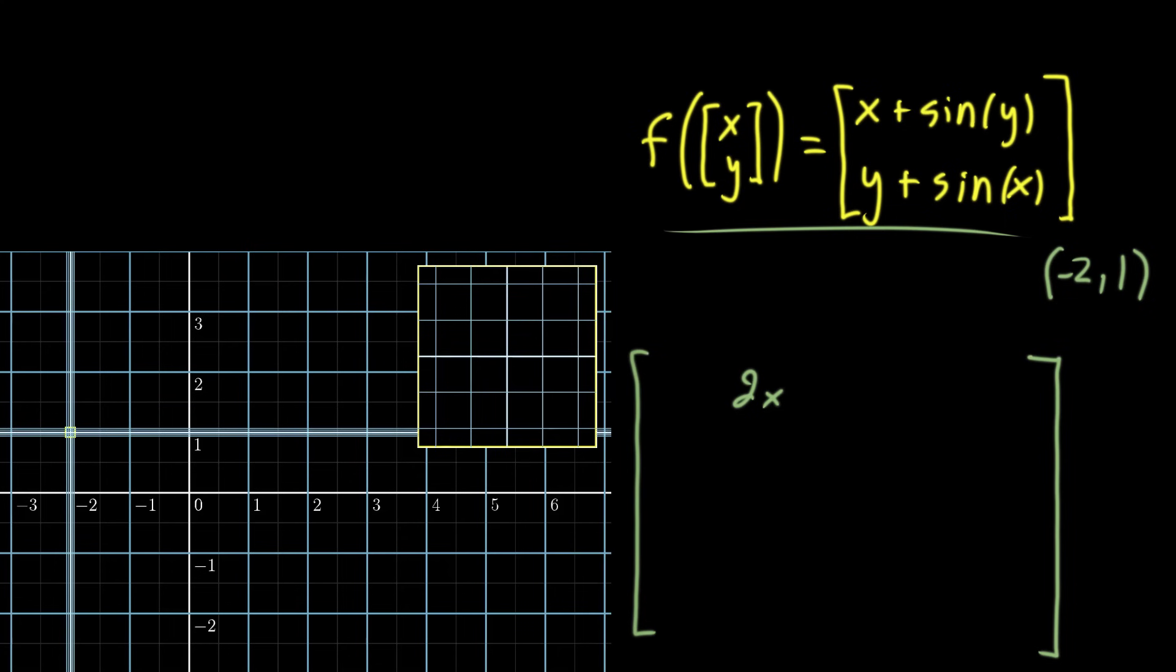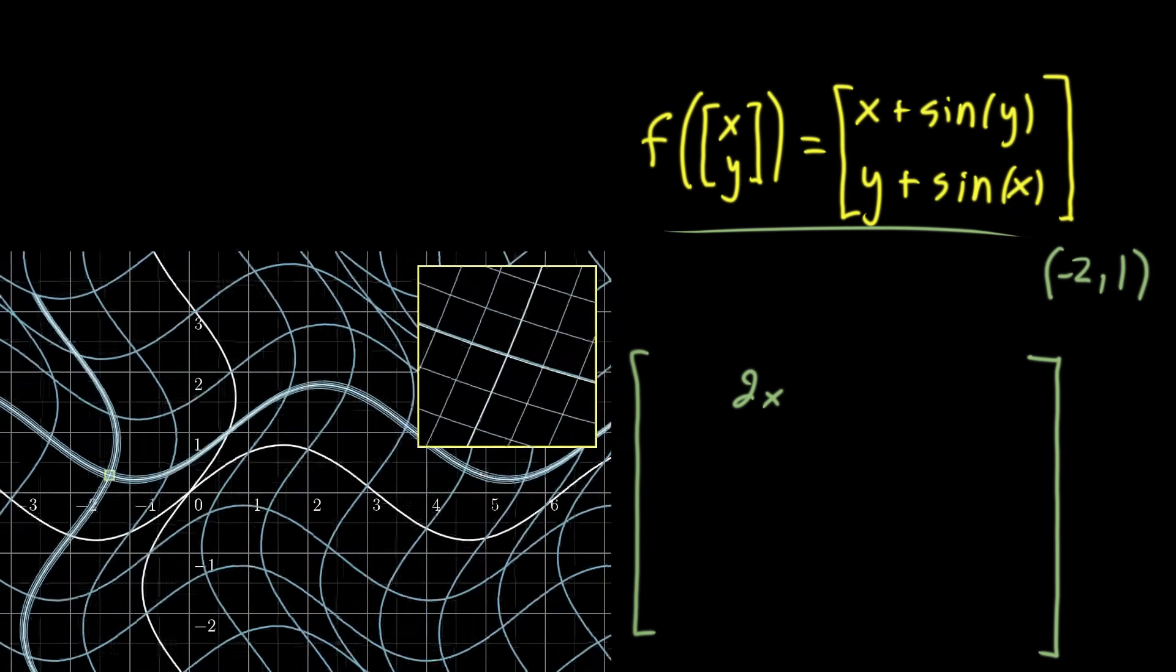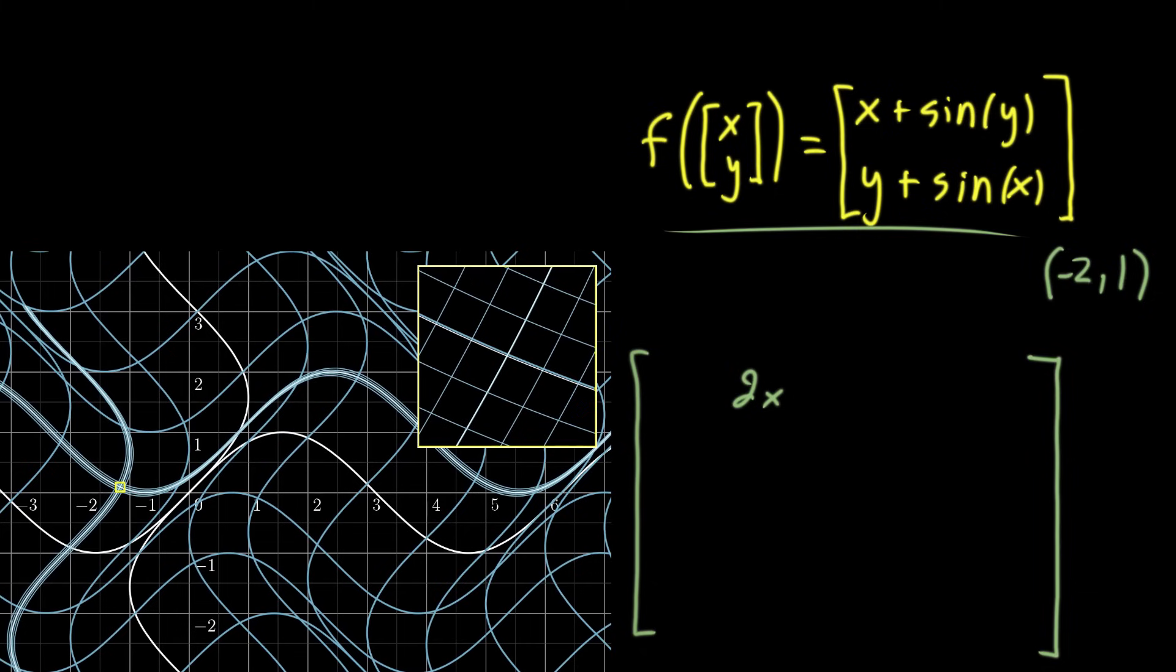And what that turns into after the transformation is going to be some tiny step in the output space. And here, let me actually draw on what that tiny step turned into. It's no longer purely in the x direction. It has some rightward component, but now also some downward component. And to be able to represent this in a nice way,